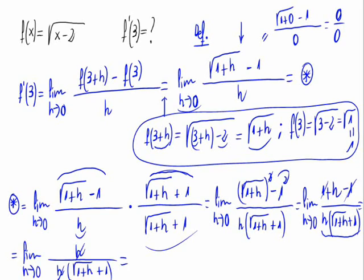We can cross out both h and we would have the limit when h approaches 0 of 1 divided by the square root of h plus 1 plus 1. And now let's substitute h by 0.